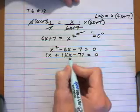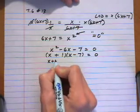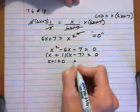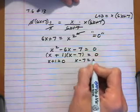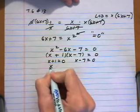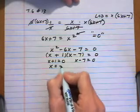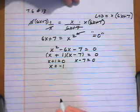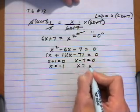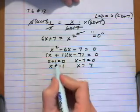If these two factors multiply together to give zero, one of them must be zero. We set each one equal to zero separately. Taking away 1 from both sides gives x equals negative 1 as one solution. Adding 7 to both sides gives x equals 7 as our other solution.